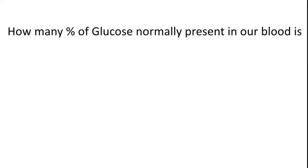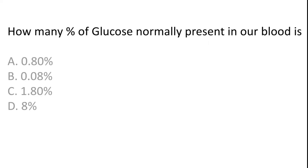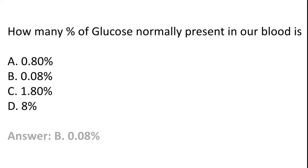How many percent of glucose is normally present in our blood? 0.80%, 0.08%, 1.80%, 8%. So the correct answer is option B, 0.08%.